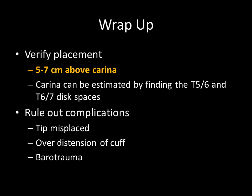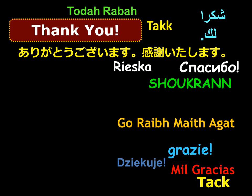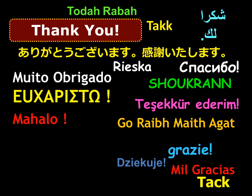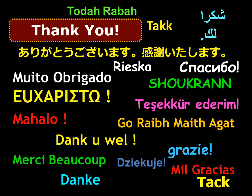ET tubes are very common in the ICU. The chest x-ray is used to verify placement — you want to verify that the tip is within 5 to 7 centimeters of the carina, which can be estimated by finding the T5-T6 and T6-T7 disc spaces. You also want to rule out other complications such as over-distension of the cuff and barotrauma, as shown in the previous examples. This is the end.